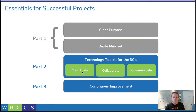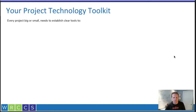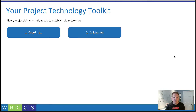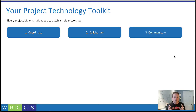You need a tool for coordinating, collaborating, and communicating. Any project, big or small, one of the first things you should do after you've established your clear purpose and developed the flow and rhythm of a project is to establish some clear tools. Those tools fall into three buckets: something to coordinate, something to collaborate, and then tools to communicate.